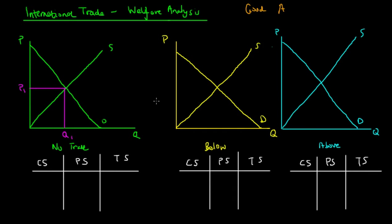As a result, we can see that consumer surplus is everyone who wishes to purchase this product above the price P1, and producer surplus being B — everyone who is willing to sell at a price below the equilibrium price of P1. So consumer surplus is A, producer surplus is B, and total surplus in society is the combined area of A plus B.